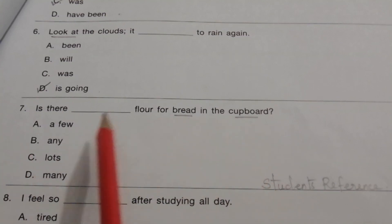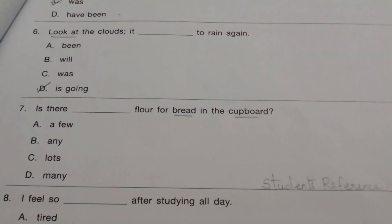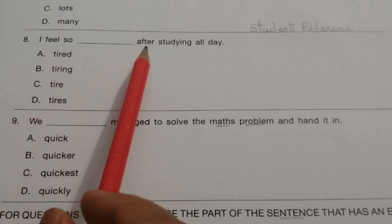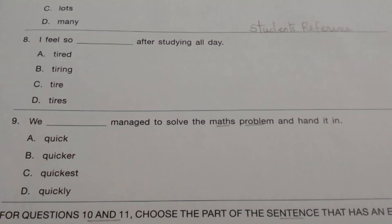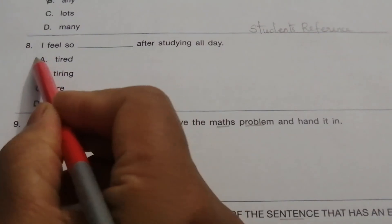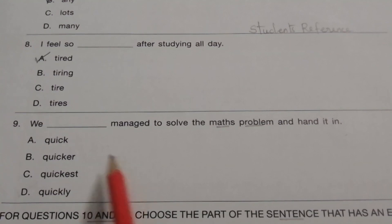Question 6: 'Look at the clouds, it dash to rain again.' Question 7: 'Is that dash flour for bread in the cupboard?' The options are a few, any, lots, many. The answer is any — 'Is that any flour for bread in the cupboard?' Question 8: 'I feel so dash after studying all day.' The answer is A — tired. Question 9: 'We dash manage to solve the maths problems and hand it in.' The answer is D — quickly: 'We quickly managed to solve the maths problem and hand it in.'